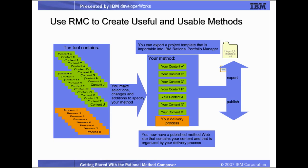The final product is the research paper. In the tool, the final output is the published method website or the exported project template — both are representations of the configuration. Like a research paper, the new tailored method may itself go into the library and become source material for future usage, if it's constructed as a new plugin.